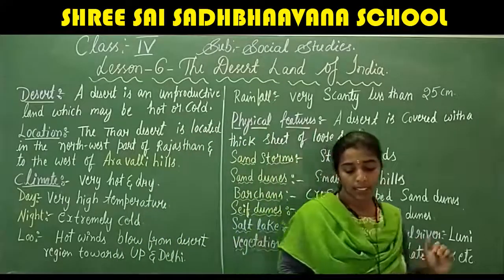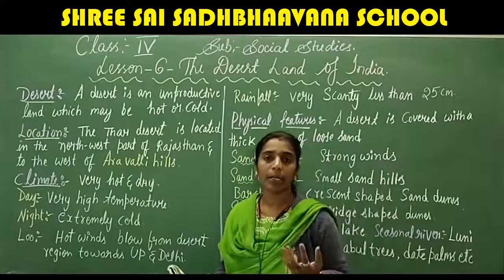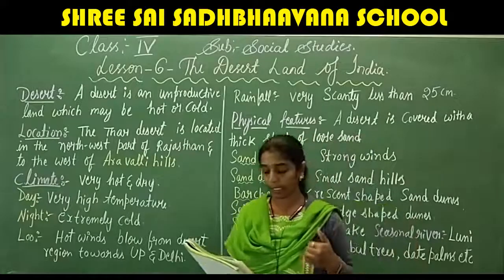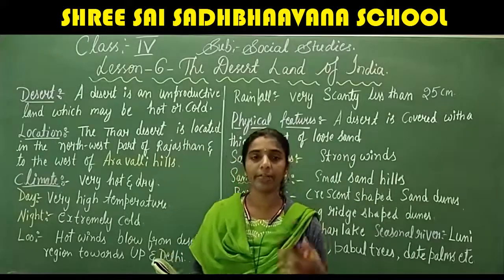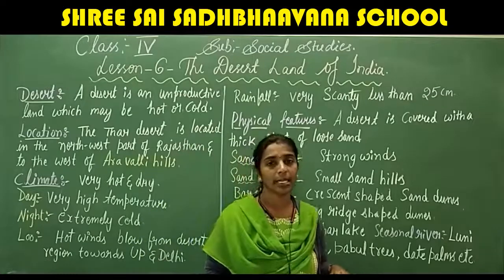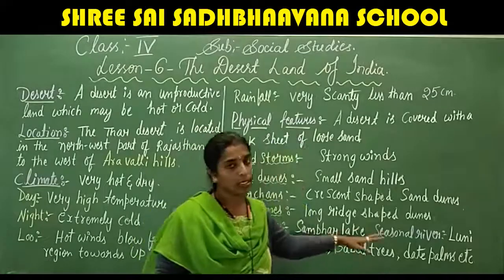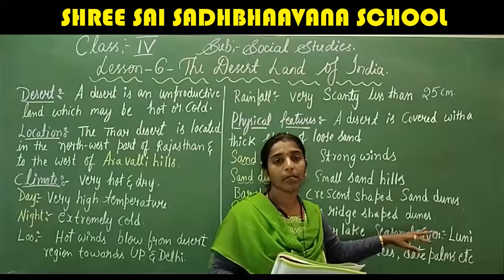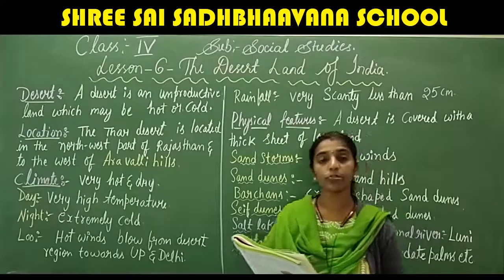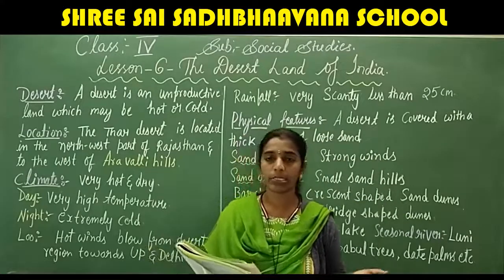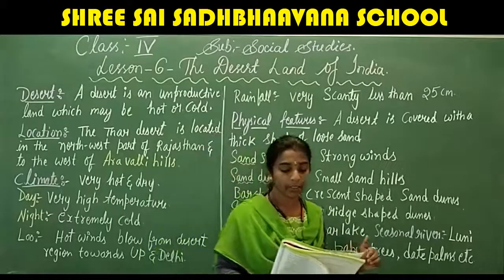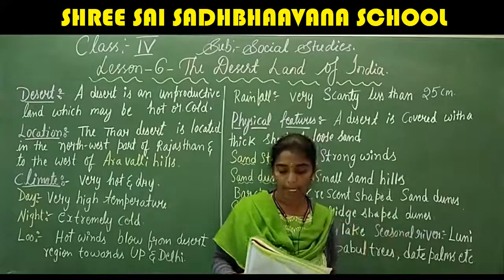There are a few temporary streams and rivers formed due to rainfall during the rainy season, but they disappear into the sand. The only seasonal river that crosses the desert area is the Loni, which flows through Rann of Kutch in the state of Gujarat and joins the Arabian Sea.